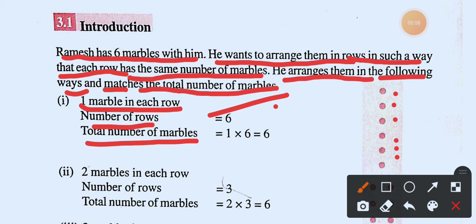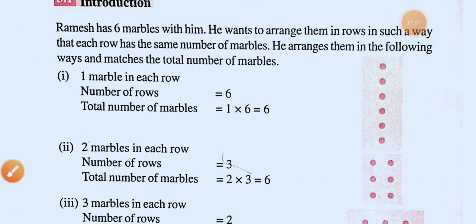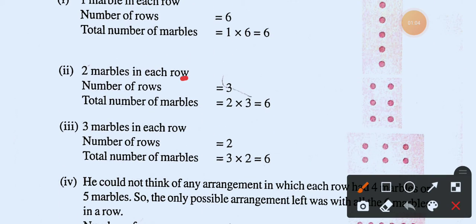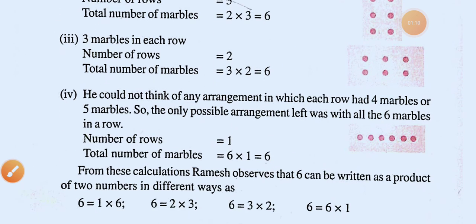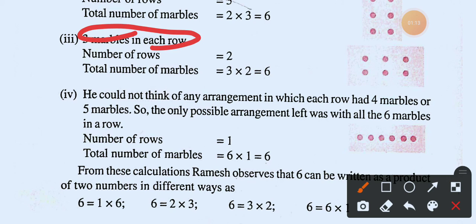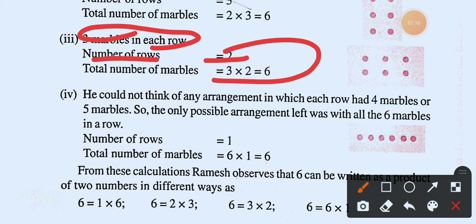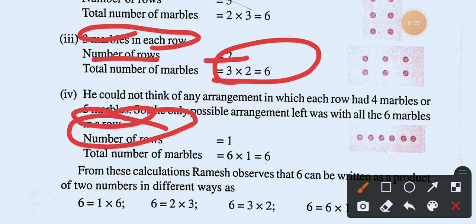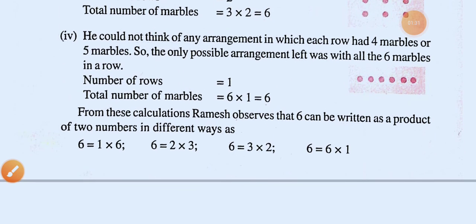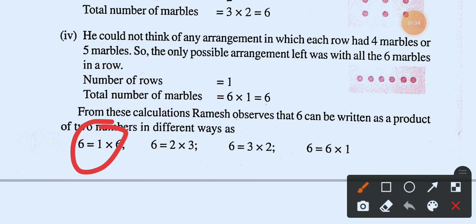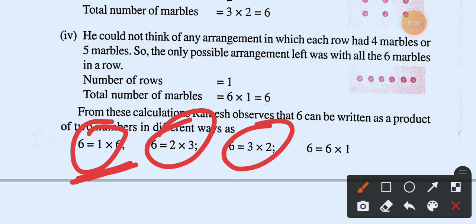In all arrangements the total number of marbles is six. Whether he makes one row, two rows, or three rows, in every case the total number of marbles remains six. Regardless of how he arranges them, the count stays the same — six marbles.